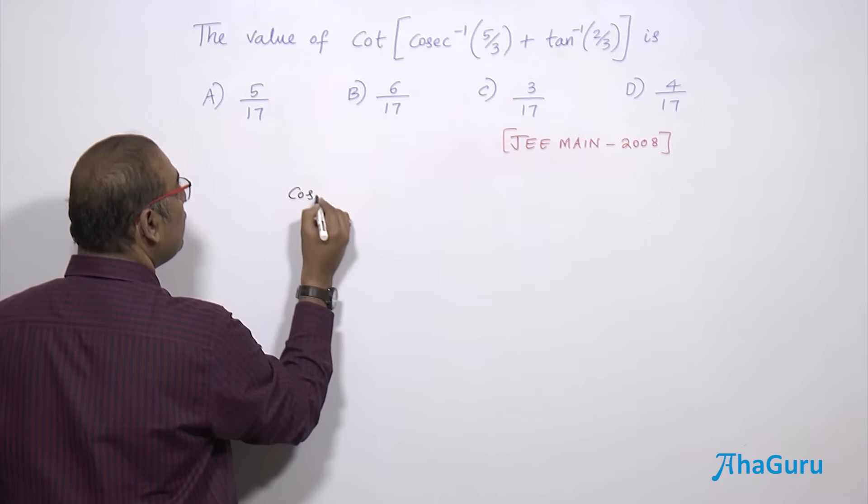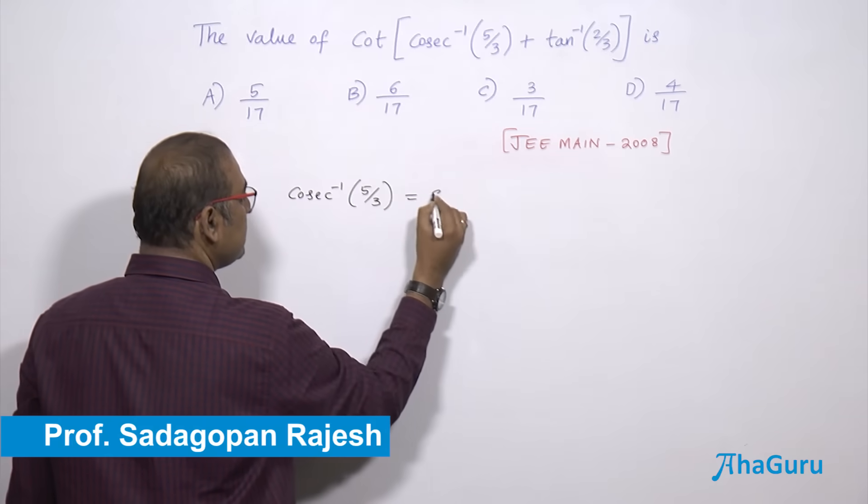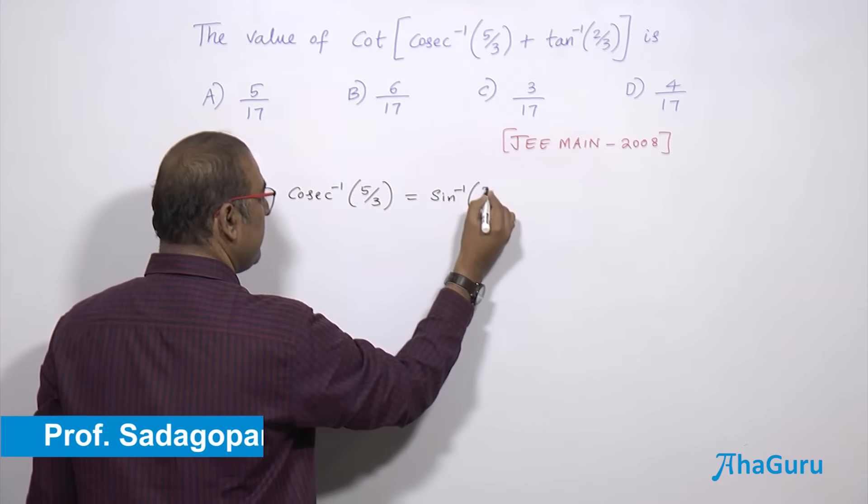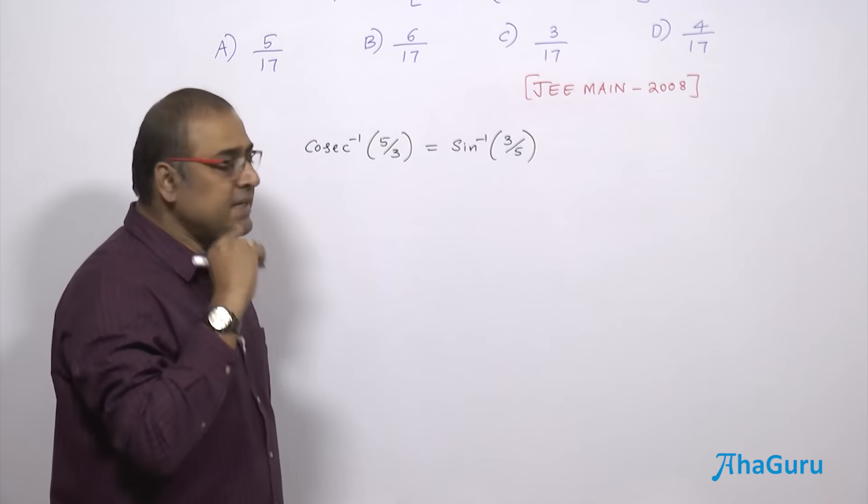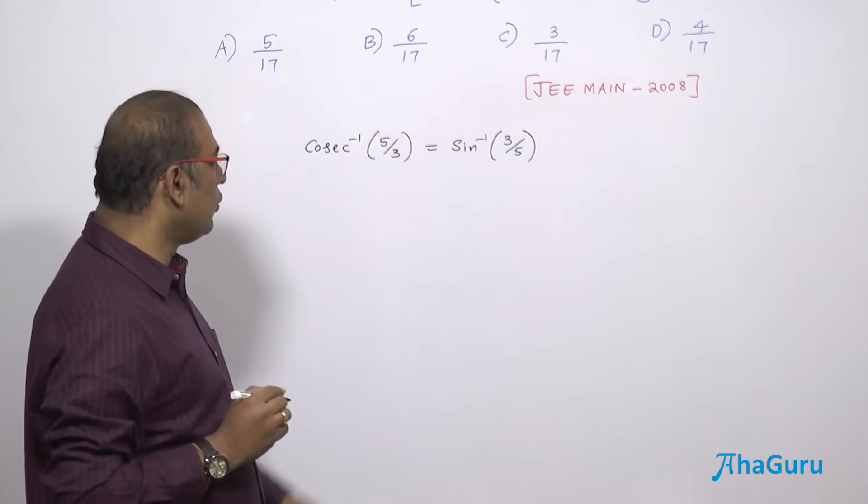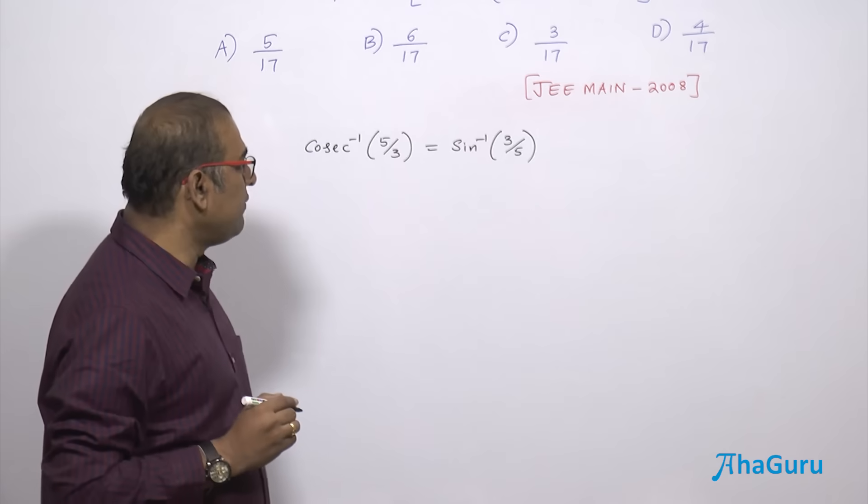Cosecant inverse of 5 by 3 is same as sine inverse of 3 by 5, because we know that cosecant theta and sine theta are reciprocal of each other. There is an identity cosecant inverse of any x is sine inverse of 1 by x. So it's 3 by 5.